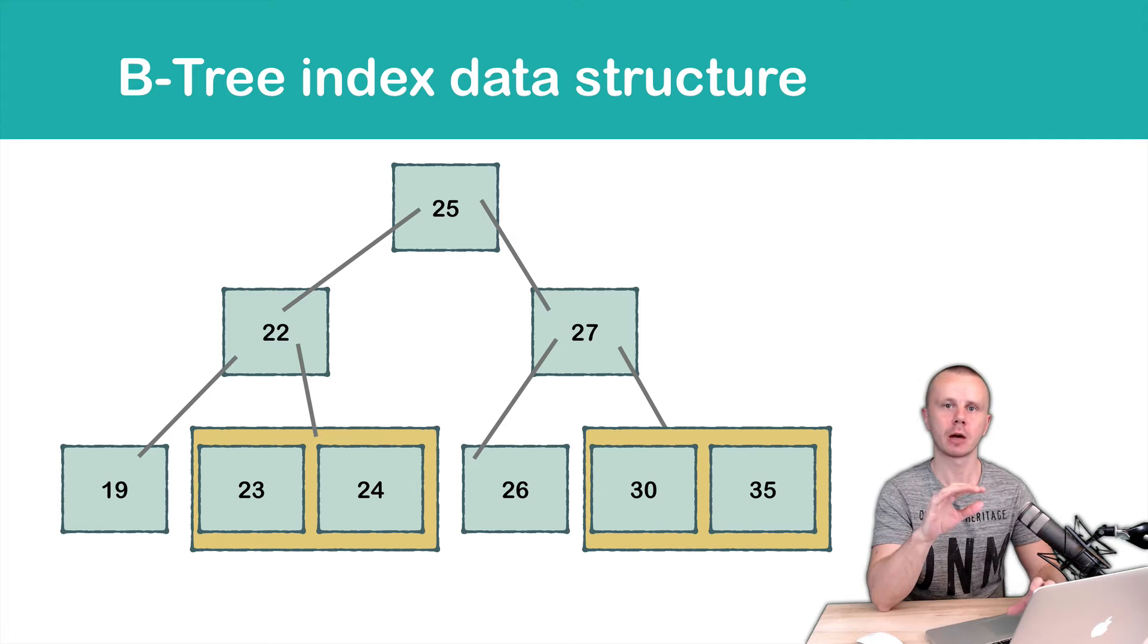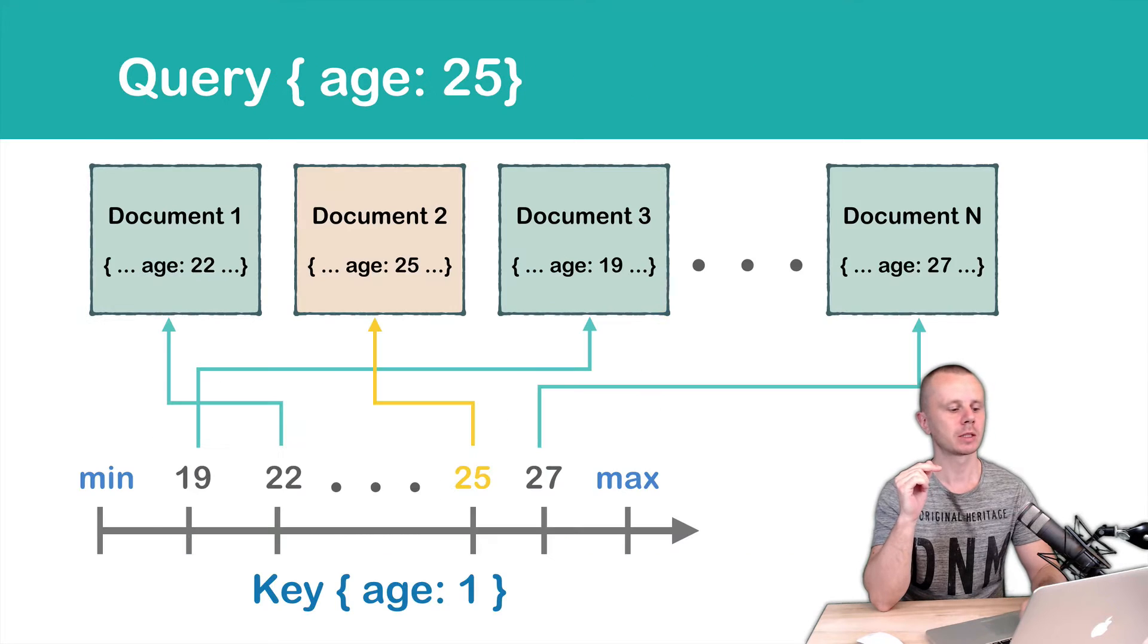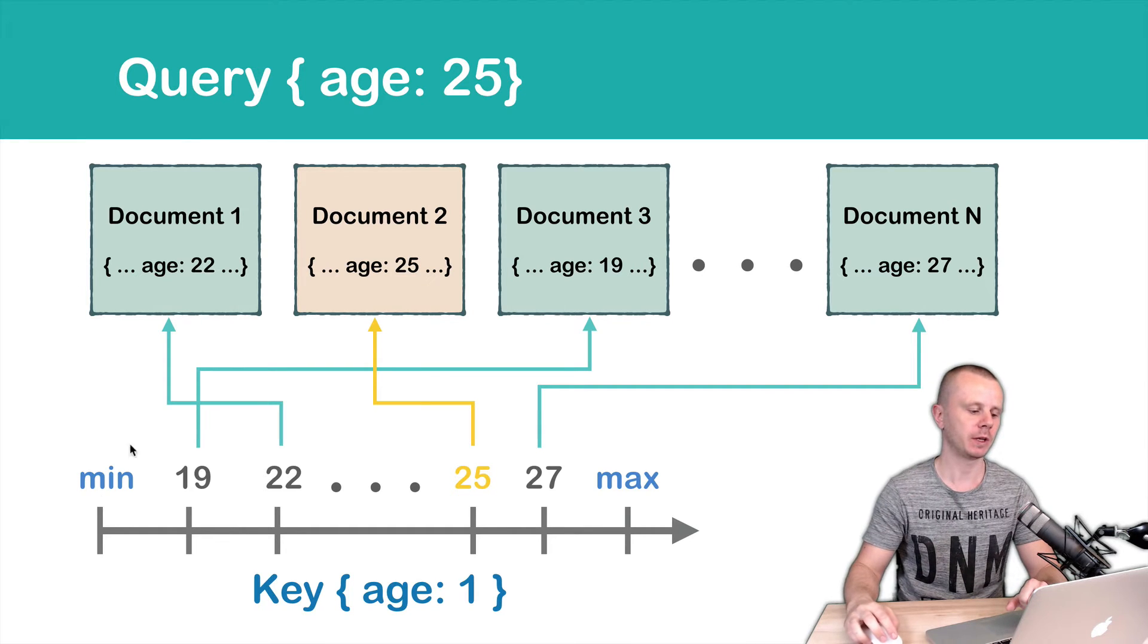Here's a short diagram that shows you how values are stored in the MongoDB index. Okay, what happens when we perform, for example, a query by age 25? Let's suppose that we have an index by age. Instead of looking at the documents,